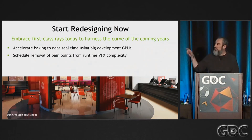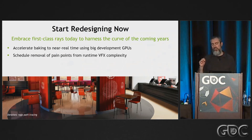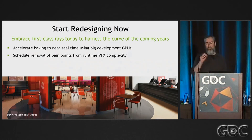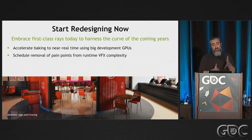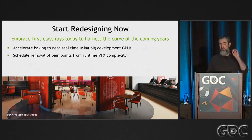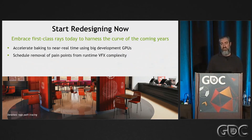Then start looking at those pain points — the places where your artists are spending a lot of time tuning to work around effects. Something like screen-space ray tracing for reflections has a really obvious transition to ray tracing. Ambient occlusion, where you're using screen-space samples for visibility, maybe that goes straight to ray tracing.